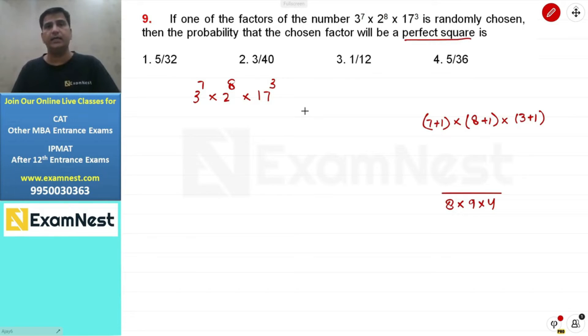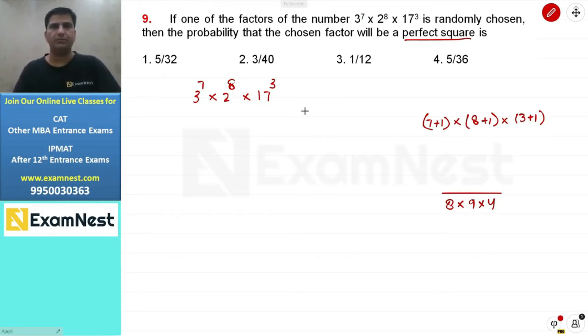What is a perfect square? If we write the number in prime factorization form, the power of each prime number should be even, or zero, for the factor to be a perfect square.